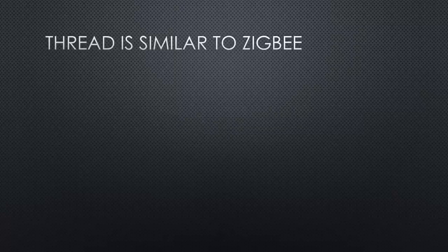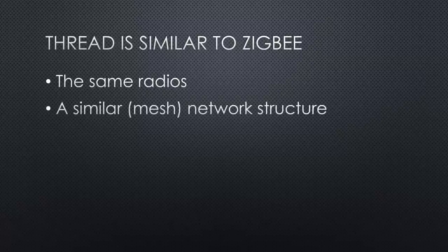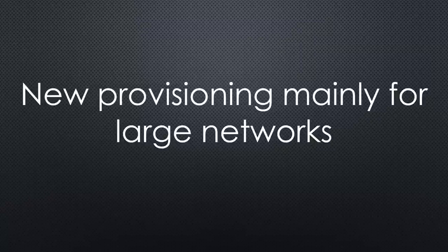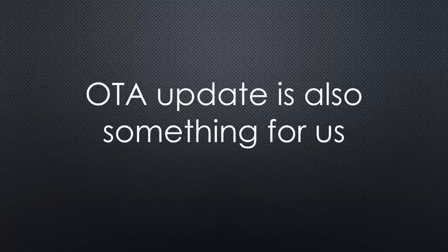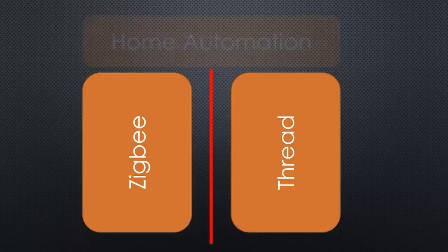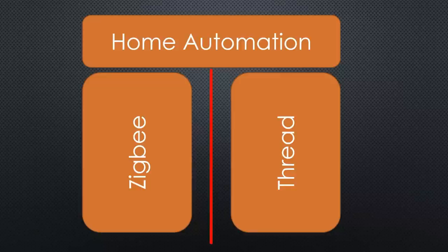All in all, Thread is very similar to Zigbee. It uses the same radios, a very similar network structure, and you will not feel any difference for small networks like those of a typical home. Many manufacturers already support the Zigbee standard, and we can mix and match their devices already now. I assume this new provisioning will have advantages for large installations like office buildings, and over time device management like software updates over the air may become easier than with current Zigbee devices. Even if they use the same physical layer, Zigbee and Thread devices are incompatible — their compatibility is achieved by Home Assistant et al., where Zigbee and Matter networks are implemented as integrations.